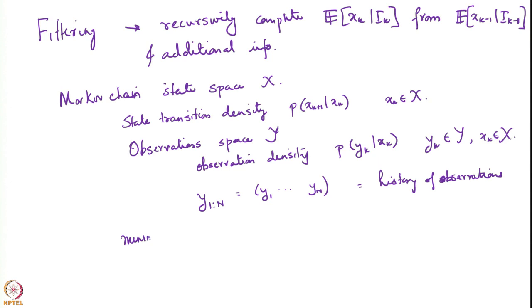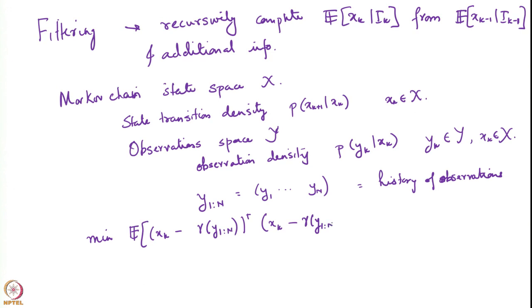The error to minimize is the mean squared error between the state x_k and a function gamma of y_1 through y_n: E[||x_k - gamma(y_1, ..., y_n)||^2]. This is the mean squared error, and minimizing it gives us the minimum mean squared error estimate.